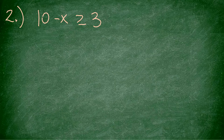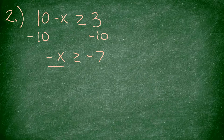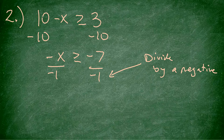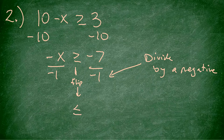Number 2: we have 10 minus x is greater than or equal to 3. I subtract 10 from both sides; I get negative x is greater than or equal to negative 7. To get rid of the negative in front, I divide by negative 1. Remember, when I divide by a negative, I have to flip the inequality. So it was greater than or equal to, now it's less than or equal to. So x is less than or equal to 7.